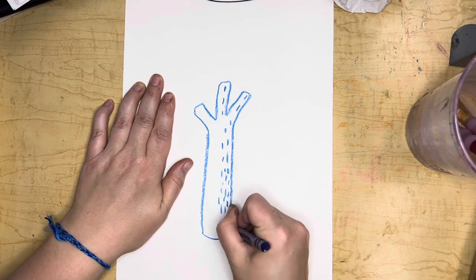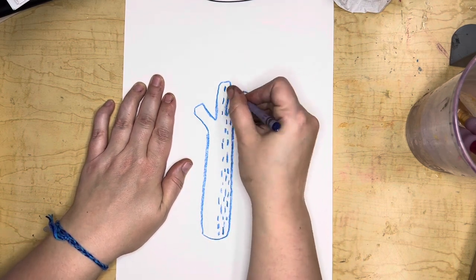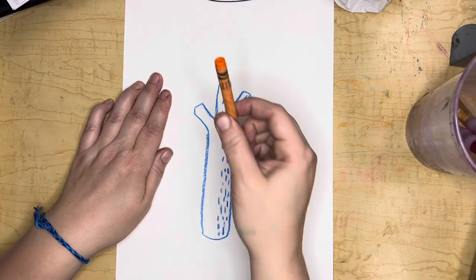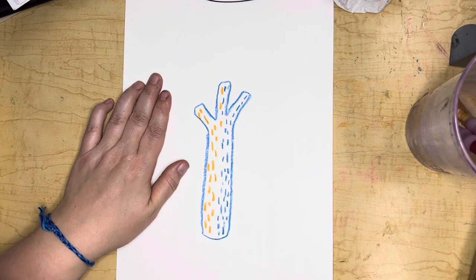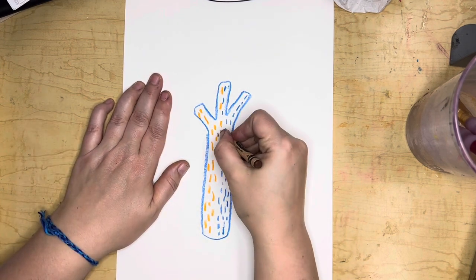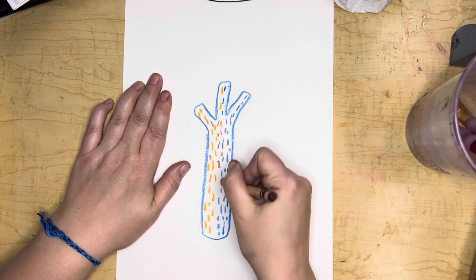These are some little short dash lines to make tree bark texture. I used blue on one side so that it would look a little shadowy and orange or yellow on the other side so it would look a little bit sunny, but you can add whatever colors you want too.